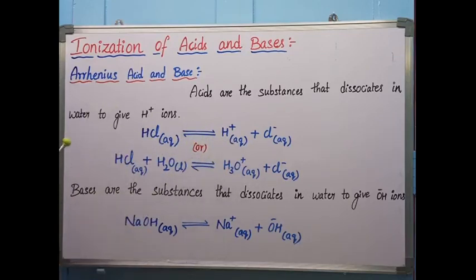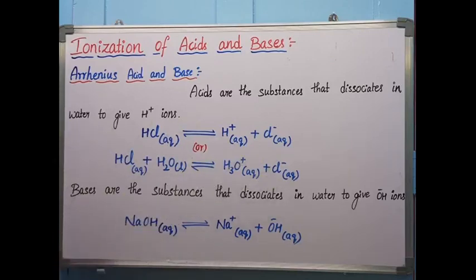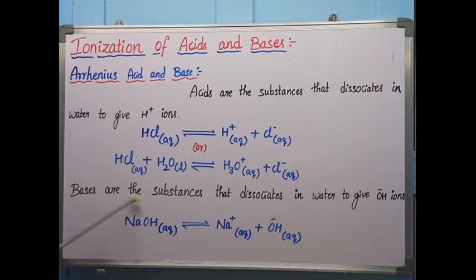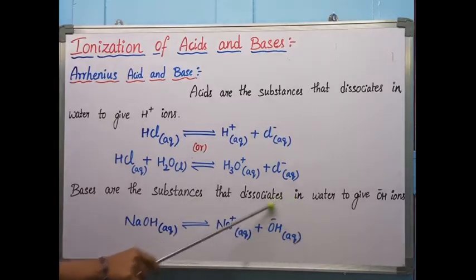These H+ ions readily react with water molecules present in the container and produce H3O+ ions. H3O+ is called the hydronium ion, along with the production of Cl− ions. Bases are substances that dissociate in water to give OH− ions. For example, NaOH (sodium hydroxide) when added to water gives Na+ and OH− ions. As it is producing OH− ions, it is called a base.